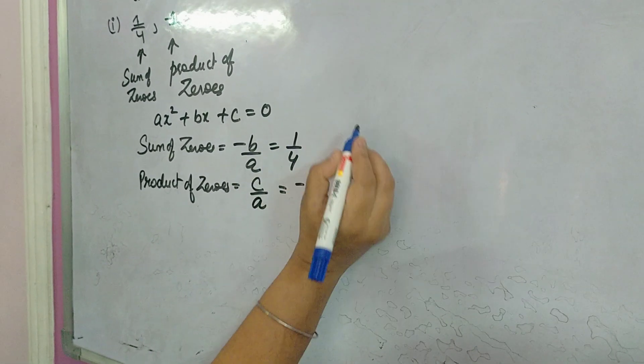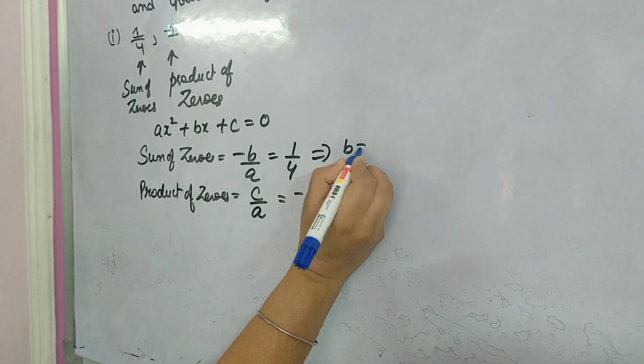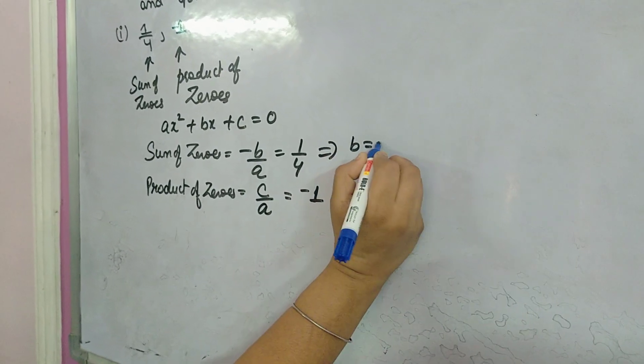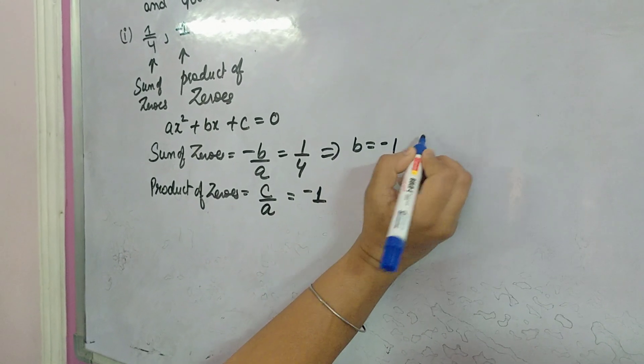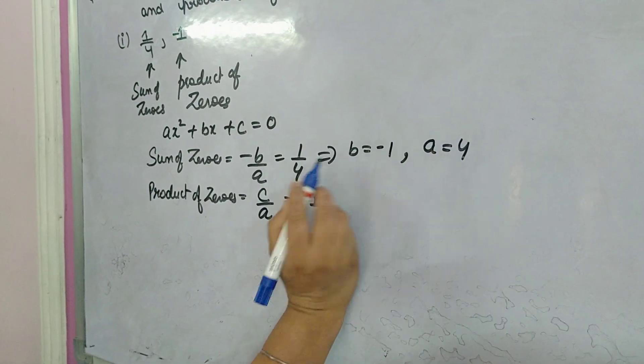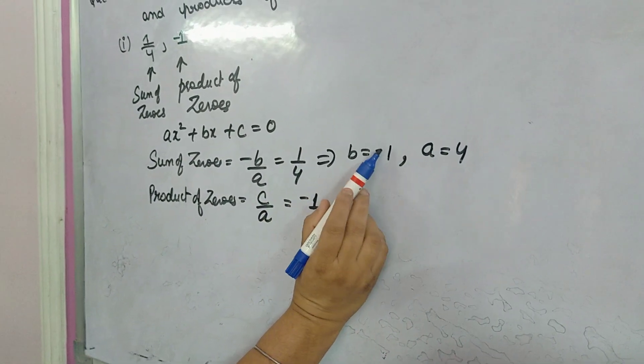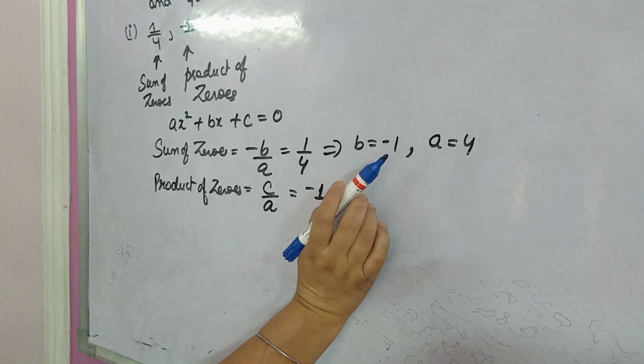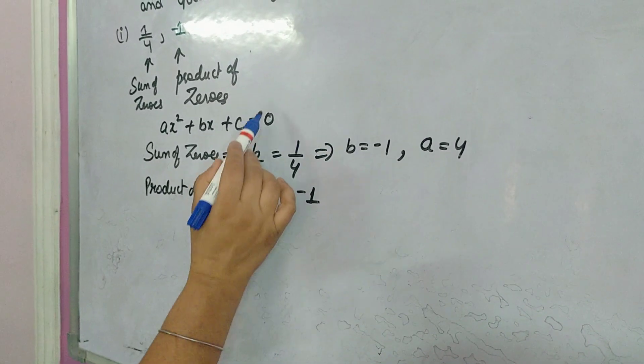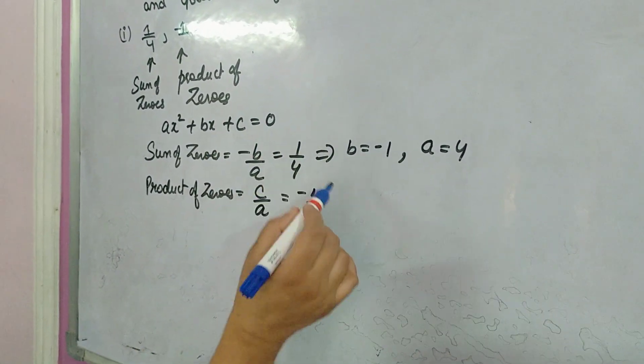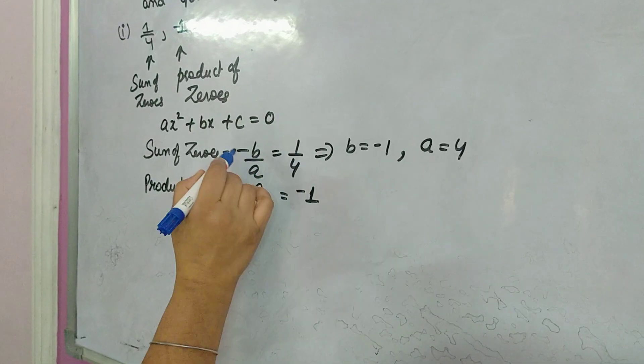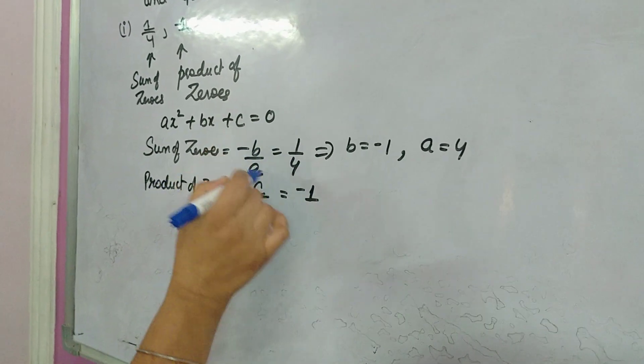If you compare these two, you will get the value of b. Minus b equals 1, so b equals minus 1. And a can be 4 in this equation. You can proceed directly with these values.